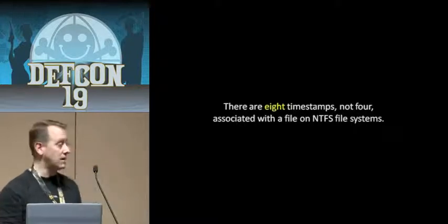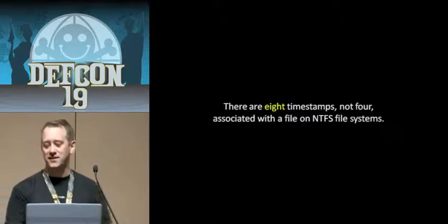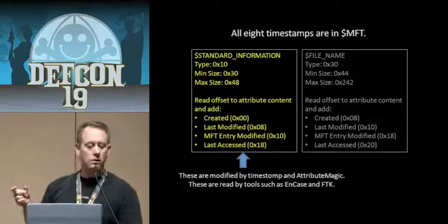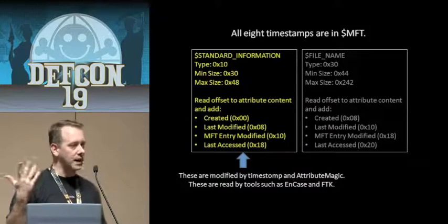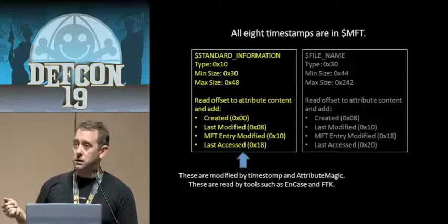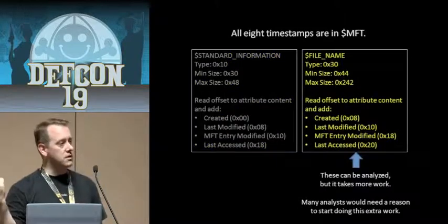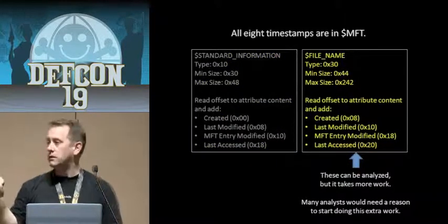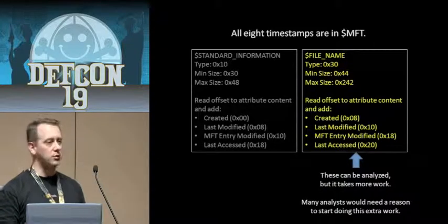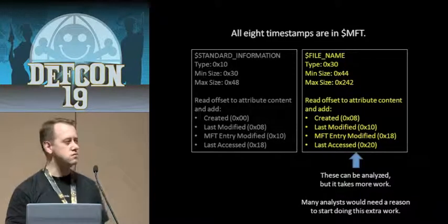For example, there aren't four timestamps on NTFS systems — there are eight. There are four timestamps under the standard information attribute, identified by hex number 10. Those are the ones picked up by forensic tools, and those are the ones that Timestomp and Attribute Magic hit. There's another set of four timestamps under attribute number 30, under file name. Those four match exactly what's in standard information, but when you time-stomp something, it doesn't modify these as well.